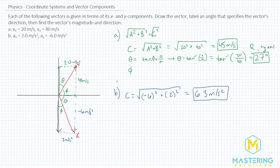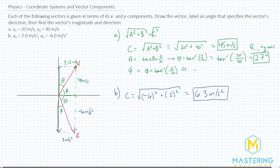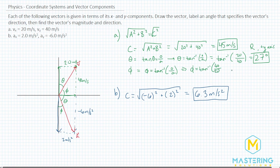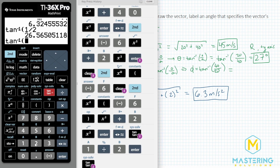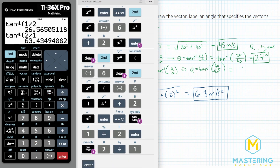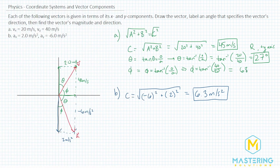For phi, we use the same tangent formula but the roles flip: phi = arctan(opposite/adjacent) = arctan(40/20) = arctan(2) = 63 degrees above the positive x-axis. You can see it just flip-flopped from the theta calculation.